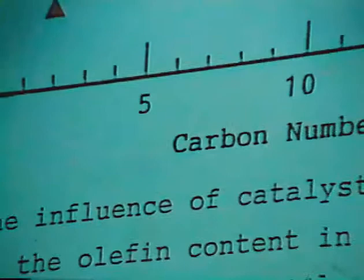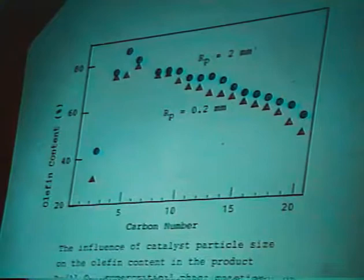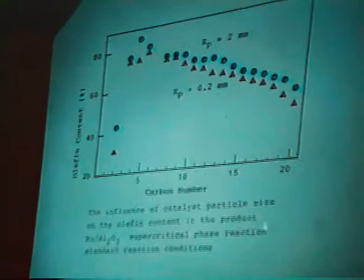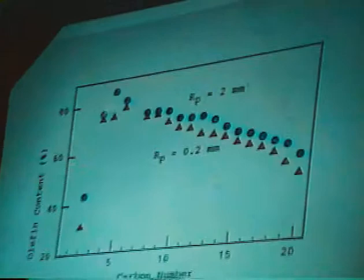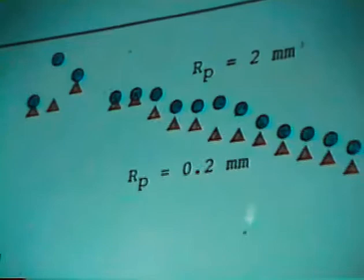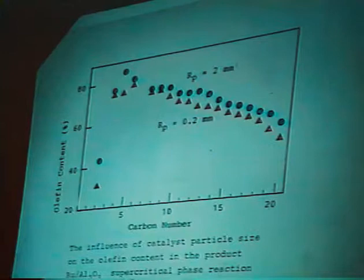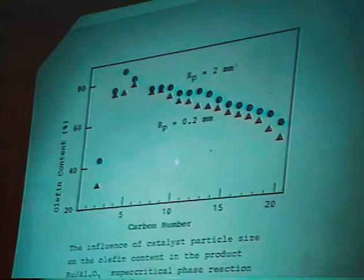In this figure, it is shown the influence of catalyst particle size on the alpha-olefin content in the products. The reaction phase is the supercritical phase Fischer-Tropsch reaction using iron-alumina catalyst. It is interesting to see that the change of catalyst particle size does not significantly affect the alpha-olefin content. So it can be concluded that the diffusion rate of alpha-olefin inside the catalyst pores is very quick, and desorption of the alpha-olefin from the catalyst surface to the bulk phase is the rate-determining step.